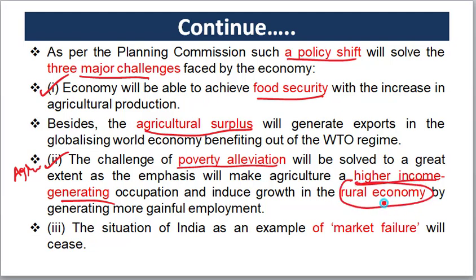If we have a strong rural economy, we can generate gainful employment. Gainful employment helps change the conditions of poverty for the population. If we generate income in the rural economy and market, we can automatically increase overall income levels. This is the main idea behind the Planning Commission's emphasis on agriculture as a prime moving force.